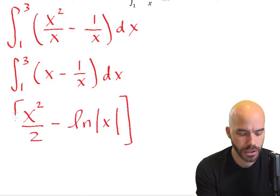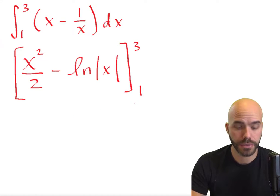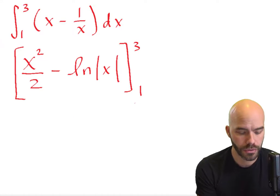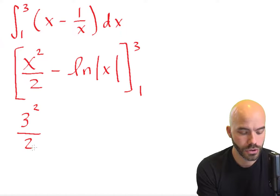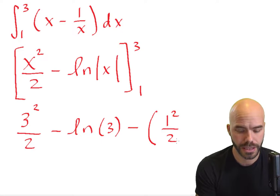And we want to calculate that from 1 to 3. But now continuing with the fundamental theorem of calculus, we'll plug in 3, so we have 3 squared over 2 minus the natural log of 3, and then minus a quantity of 1 squared over 2 minus natural log of 1.